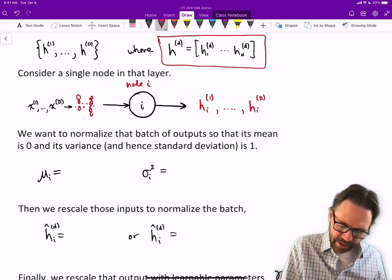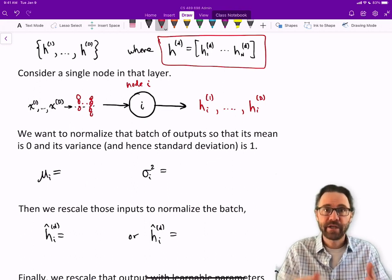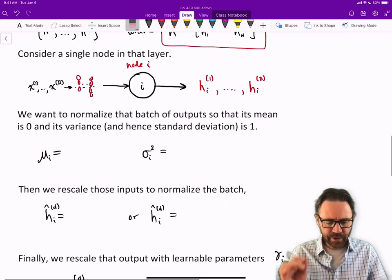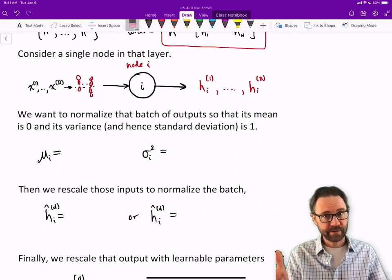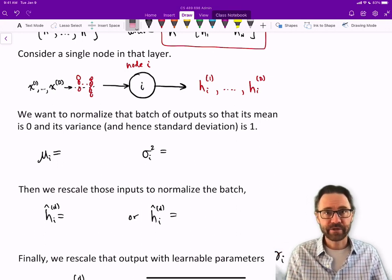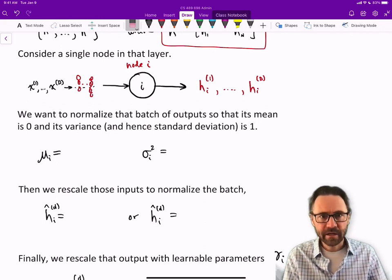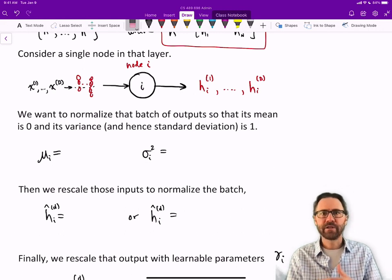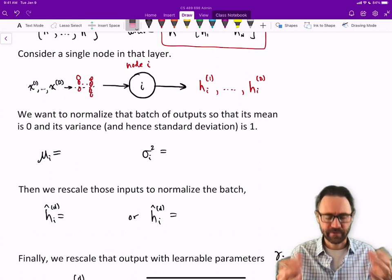It's basically a different level of activity of this hidden node for each different input. What we want to do is renormalize that batch of outputs. We want to rescale those h's so that its mean is zero and its variance is one. Variance is basically the square of standard deviation, so we're looking for standard deviation or variance of one.